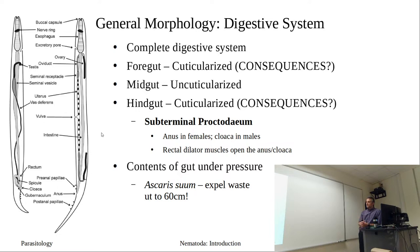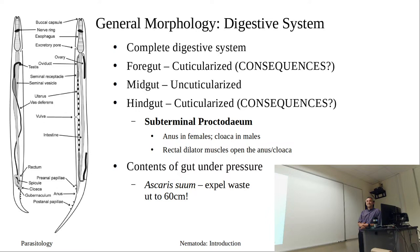The hindgut includes the anus or cloaca, depending on sex, and the rectal dilator muscles. You have the pharynx pushing everything down, with strong muscles controlling when the worm defecates. These contents are under so much pressure that the worm can actually shoot or expel waste quite a distance. Ascaris can shoot its waste up to 60 centimeters — that's how strong the hydrostatic pressure is.